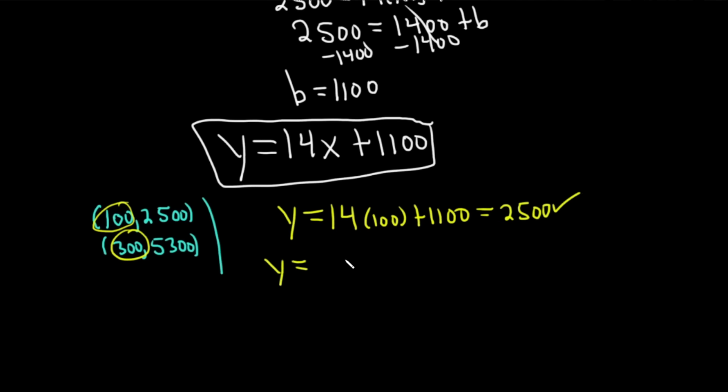y equals, let's just check the other one, 14 times 300, plus 1,100. Okay? And this is equal to, you can check, 5,300. So it checks. Put this in your calculator, and it checks. So our answer is good. This is the correct answer.